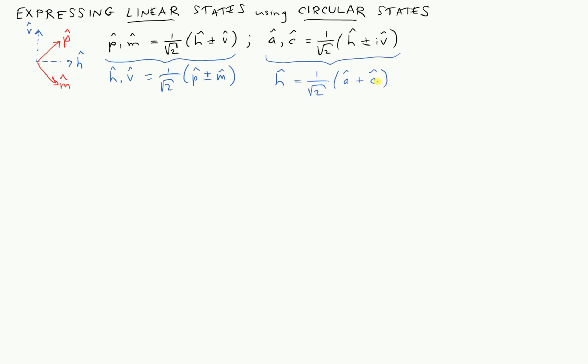Now what does this expression mean conceptually? Well, what are a-hat and c-hat again? A-hat is a unit vector basis state. It's pointing here at time t0 and rotating anti-clockwise. That's the a-hat state, to remind you.